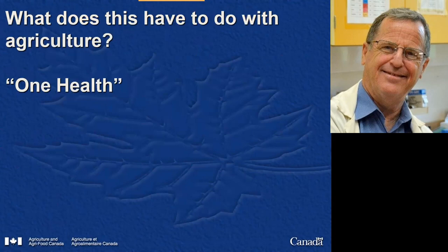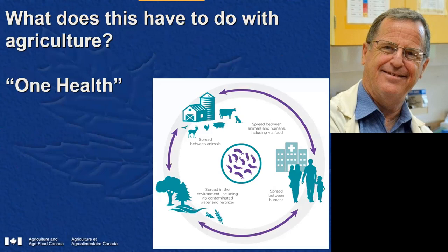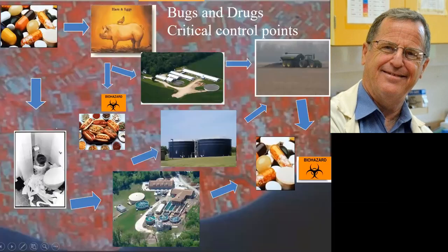So what does this have to do with agriculture? Agriculture is linked to people through what's been coined the One Health framework — through the environment and through the consumption of food, people are exposed to microbiology shed by animals or carried in foodstuffs. If we're feeding livestock antibiotics and selecting for resistance in those production systems, that can come back to haunt us. The focus of a lot of our work here has to do with what gets applied on the land through manure.